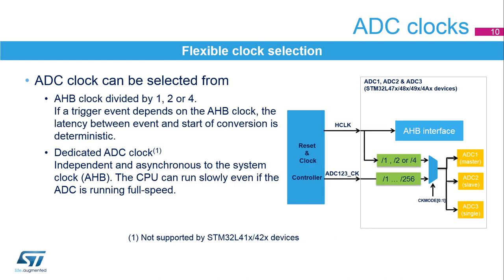The ADCs have a selectable clock source. When the system needs to run synchronously, the AHB clock source is the best selection. If a slow CPU speed is required but the ADC needs a higher sampling rate, the dedicated ADC clock can be selected.